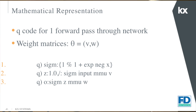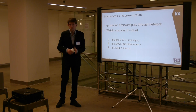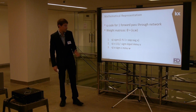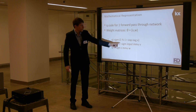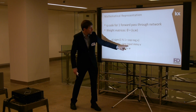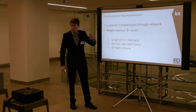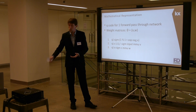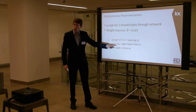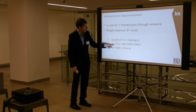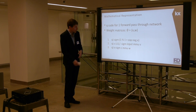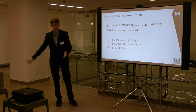It's quite easy to write Q code for this. For one forward pass through the network, we take our parameters: weight matrix V between the input and hidden layer, and weight matrix W between the hidden and output layer. We define a sigma function as 1 divided by 1 plus e to the minus x. For the hidden layer, we multiply our input matrix by V, apply sigma piecewise, then add a bias node by appending a column of ones. Taking this new matrix, we multiply by W and apply sigma to get the output. That's the entire forward pass in KDB.